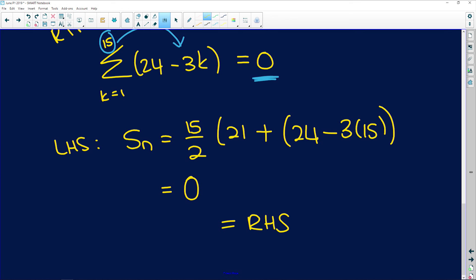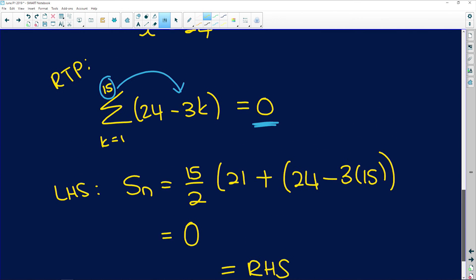And that is equal to the right hand side. Remember we're required to prove this, this is the right hand side. And therefore you've proved that the sum of this whole expression here to term 15 is equal to 0. That is the end of question 3.